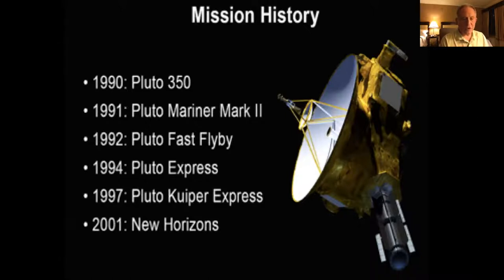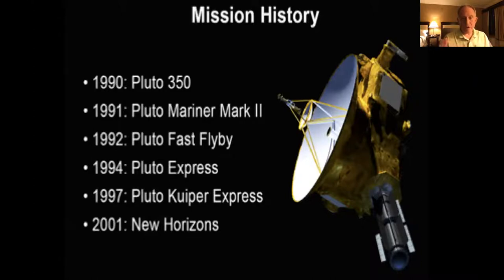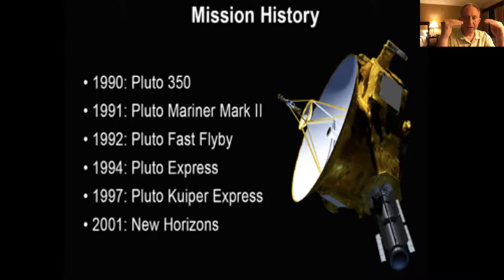It was 2001 before New Horizons actually became a mission that got off the drawing board and got built. A big part of that was convincing the planetary science community that going to Pluto was one of the most important things we could do with our limited budgets, because there are many competing desires — studying comets and asteroids, going back to the giant planets, our own moon, and Mars. Only the very top science gets funded; it's not just the top 10%, more like the top 5%.